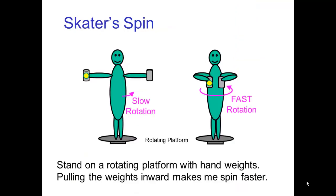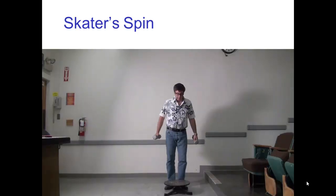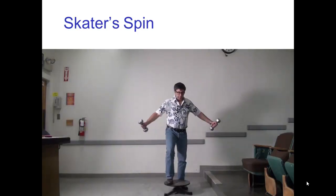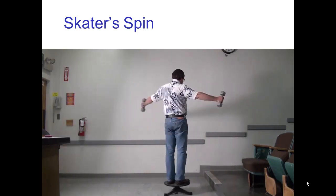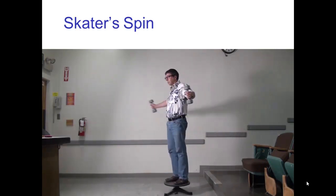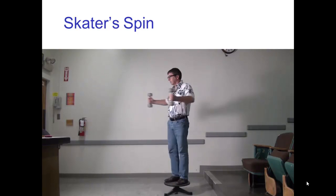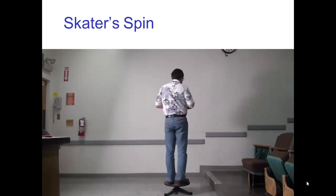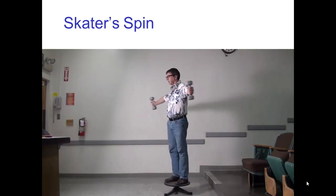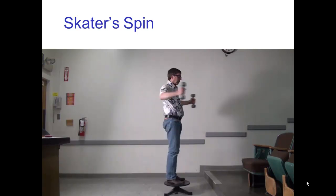I can demonstrate this by standing on a rotating platform while holding hand weights. Pulling the weights inward makes me spin faster. Let's watch. Notice that I spin faster when the weights come inward, and spin slower when I bring the weights back out.